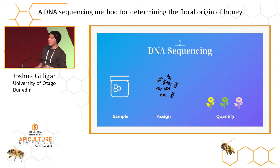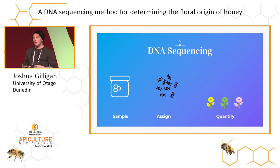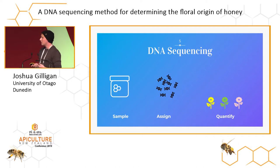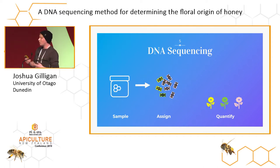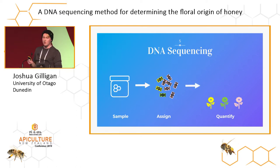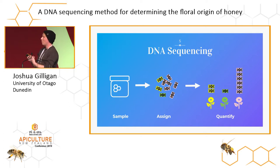Another way to go about this is through DNA sequencing. These DNA technologies have become a lot more frequent over the years, so I'll go through the basics: you get a sample, take out all of that DNA, amplify it for specific markers, then go to an online resource and assign it to plants, look at the ratios, and overall quantify how much of each plant was used to make that specific honey.